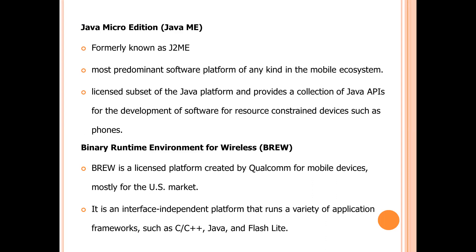Java Micro Edition, formerly known as J2ME, is the most predominant software platform of any kind in the mobile ecosystem. It is a subset of the Java platform and provides a collection of Java APIs for the development of software for resource-constrained devices such as phones. BREW is a licensed platform created by Qualcomm for mobile devices, mostly for the US market. It is an interface-independent platform that runs in a variety of application frameworks such as C, C++, Java, and Flash.